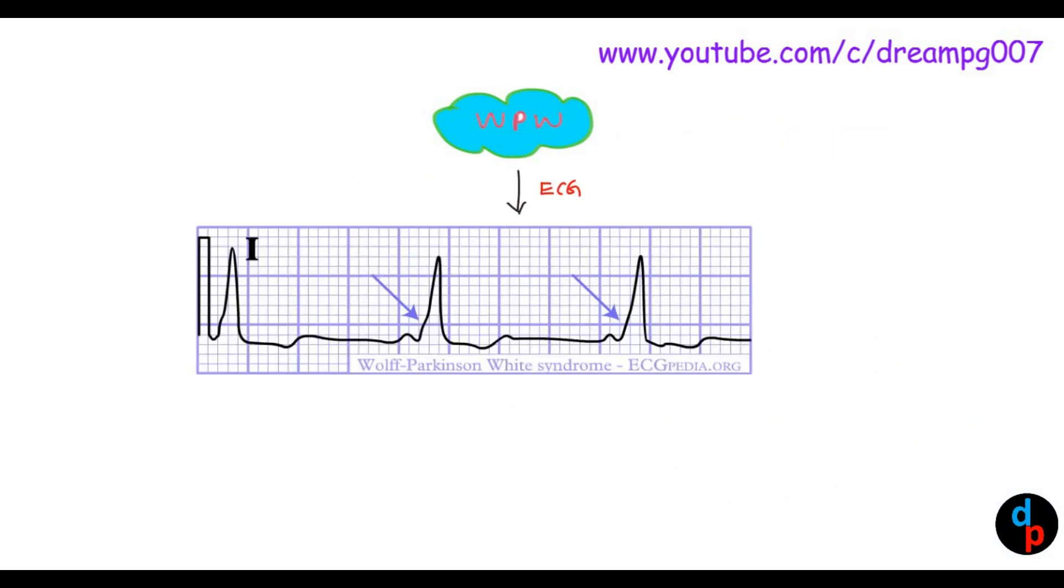Let's have a look at the ECG findings in Wolff-Parkinson-White syndrome. It includes short PR interval, and there will be a slurred upstroke of the QRS complex, which is famously known as Delta Wave, and a wide QRS complex.